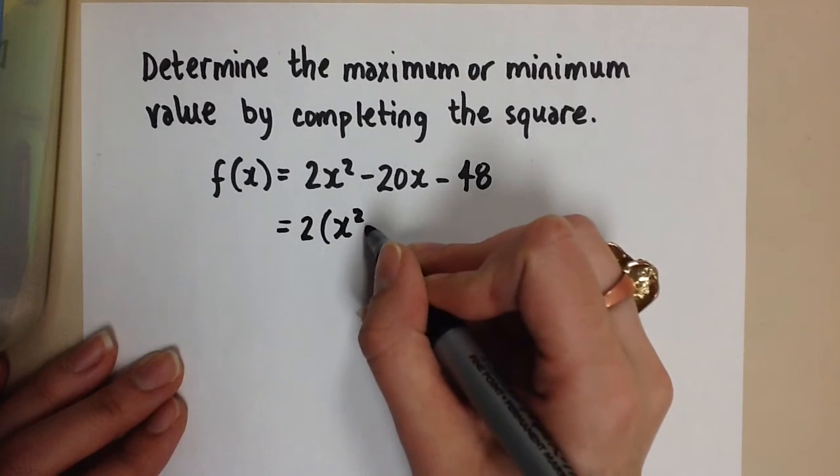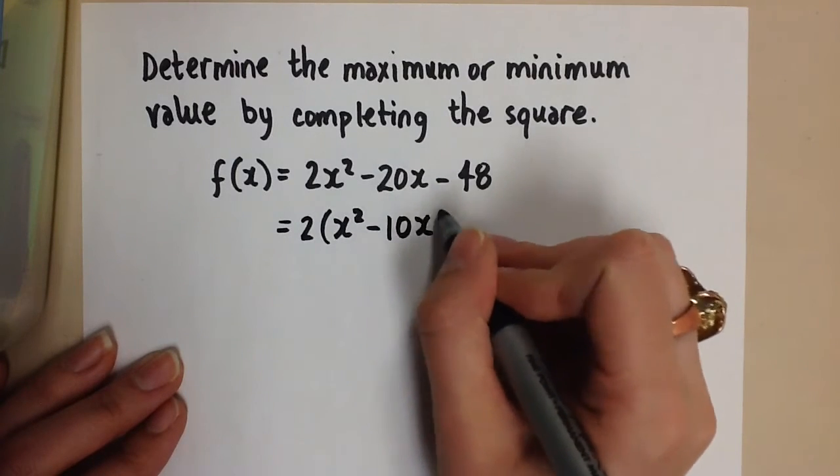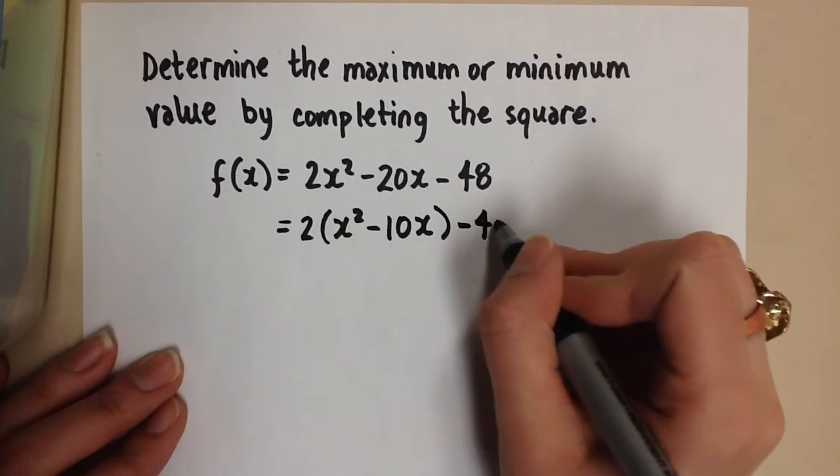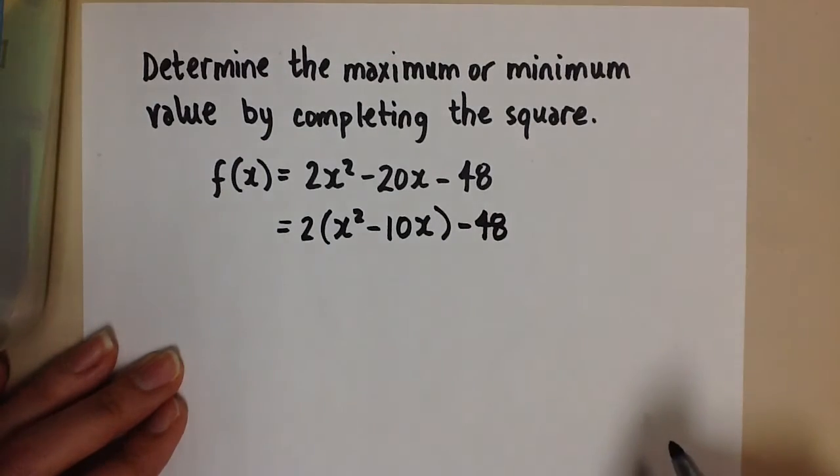So we get x squared minus 10x in the brackets, and we leave that minus 48 outside of the brackets.